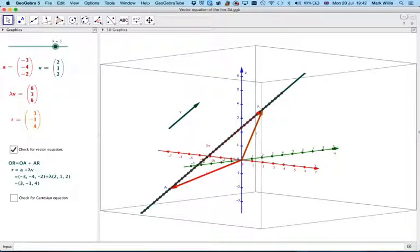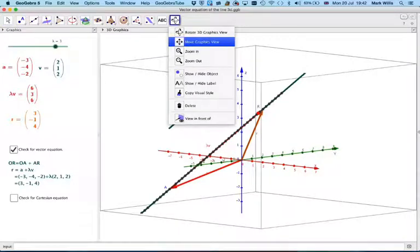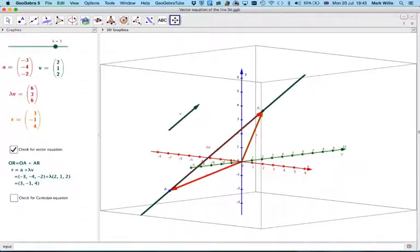If I just move the dots, I can get rid of the dots by doing this. Now I've got rid of the dots. And if I just remove the vector equation.